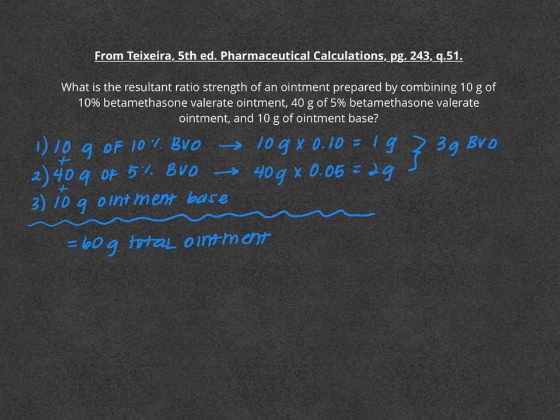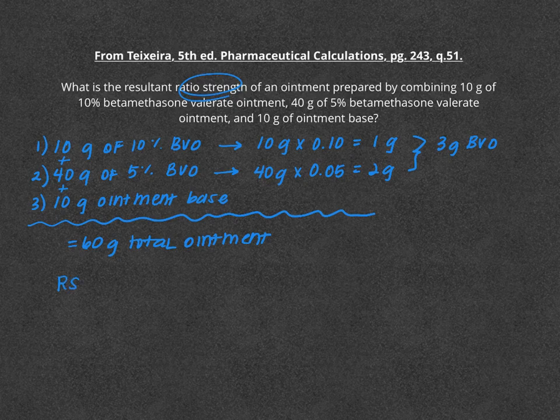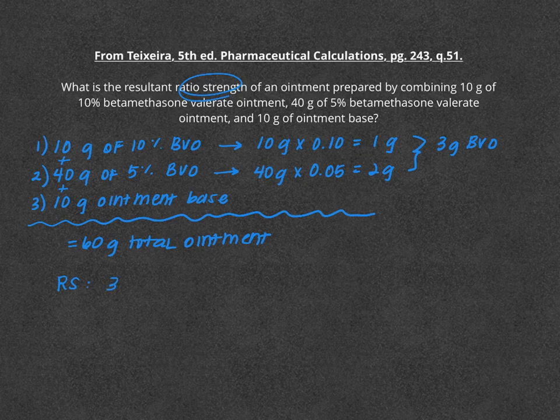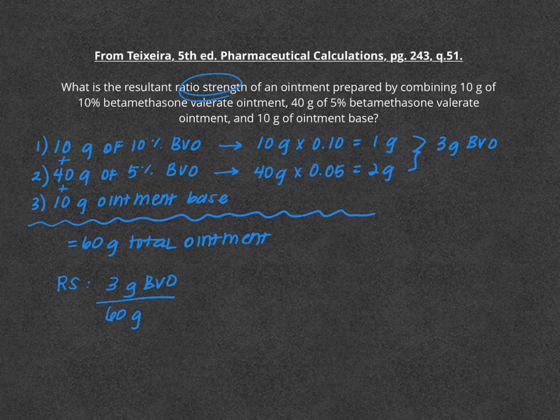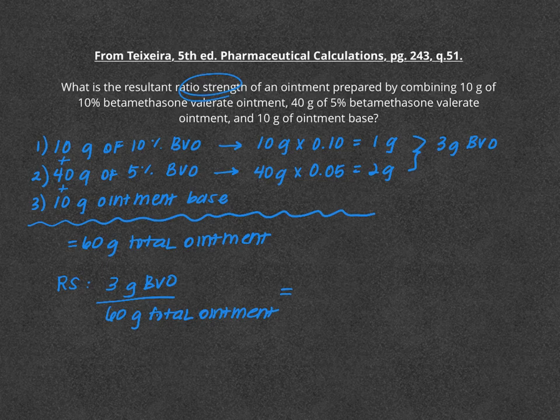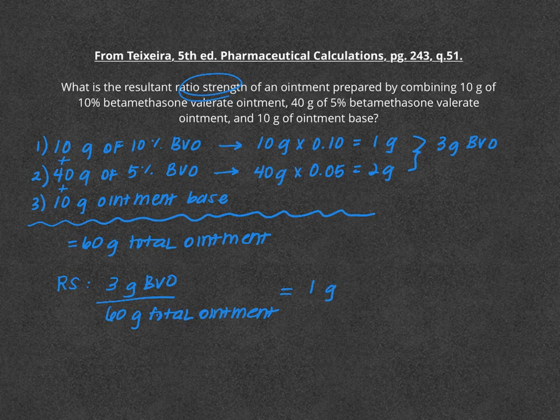The question asked for ratio strength, so we're going to set up our equation to find that. Remember, we look at parts of a particular solute over the total volume of that compound. In this case, we have 3 grams of our solute over 60 grams of our total ointment. Because this is a ratio, this is essentially equal to 1 part over the total number of parts. We're going to use grams in this case, and we're going to solve for x, our total number of parts in that ratio.